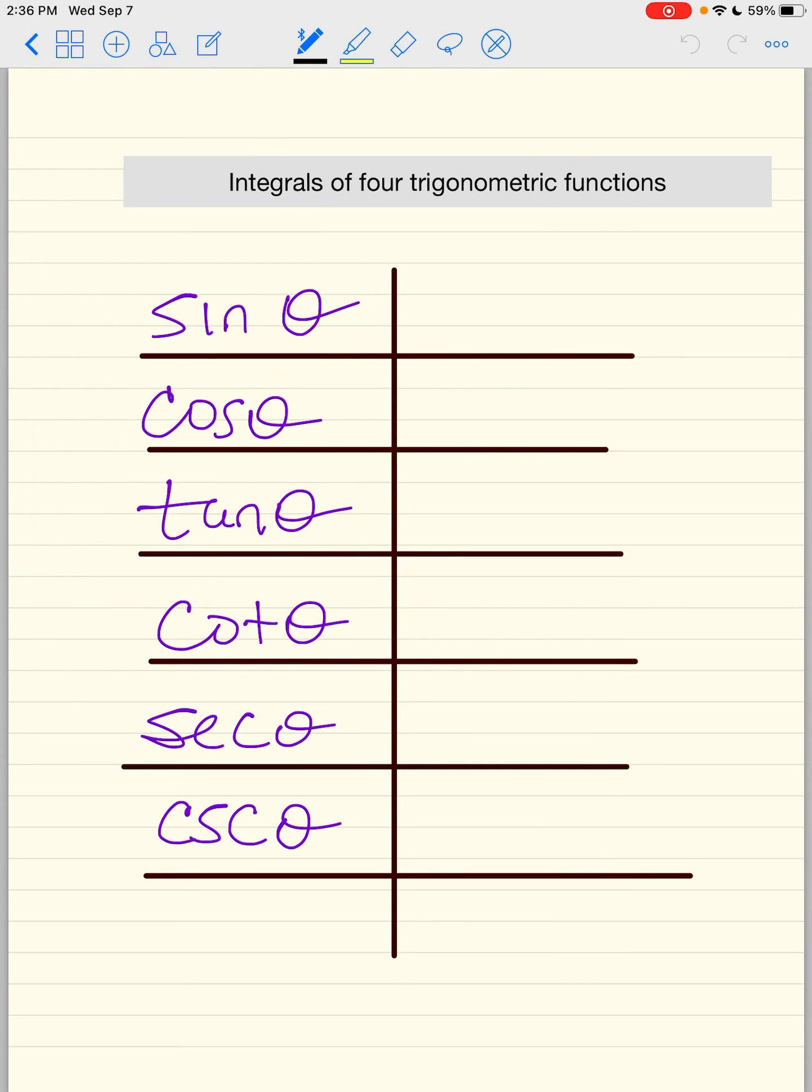So I wrote down sine, cosine, tangent, cotangent, secant, and cosecant. If you guys watch the other videos, you understand why I have it in this format. We're going to go positive, negative, positive, negative, positive, negative. So anything that has a c is negative.